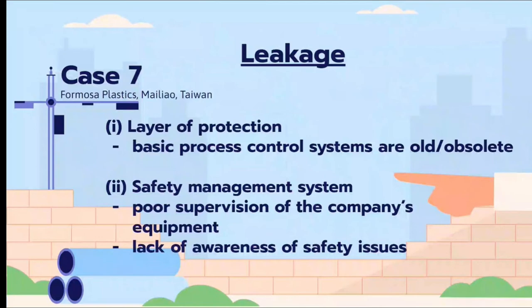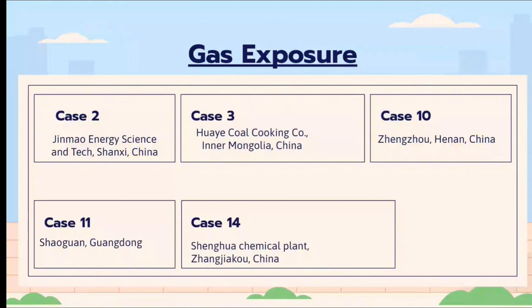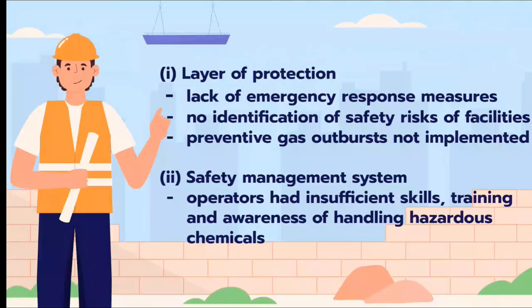Cases 2, 3, 10, 11, and 14 share similar gas-related incidents that resulted in multiple casualties. In terms of layer of protection, Case 10 lacked emergency response measures, while Cases 2, 3, 11, and 14 had no identification of safety risks and no provisions for preventing gas outbursts. For the safety management system, operators had insufficient skill training and awareness in handling hazardous chemicals.